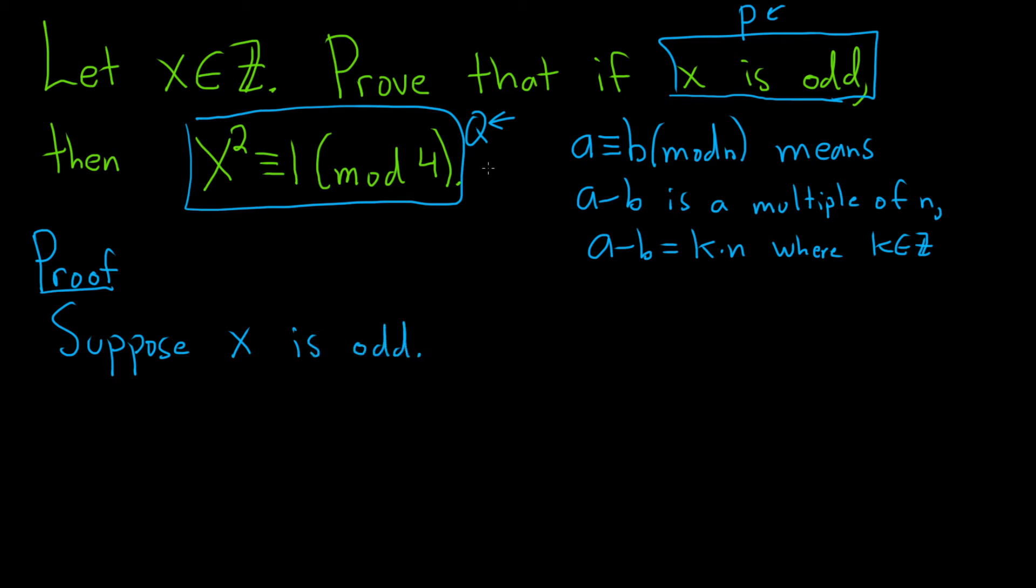Suppose x is odd. So it's an odd integer. This means that x equals say 2m plus 1 for some integer m, some m in the set of integers. So now we have to show x squared is congruent to 1 modulo 4. If we translate that using our definition, that would mean x squared minus 1 is a multiple of 4. So the natural thing to do is to look at x squared minus 1.